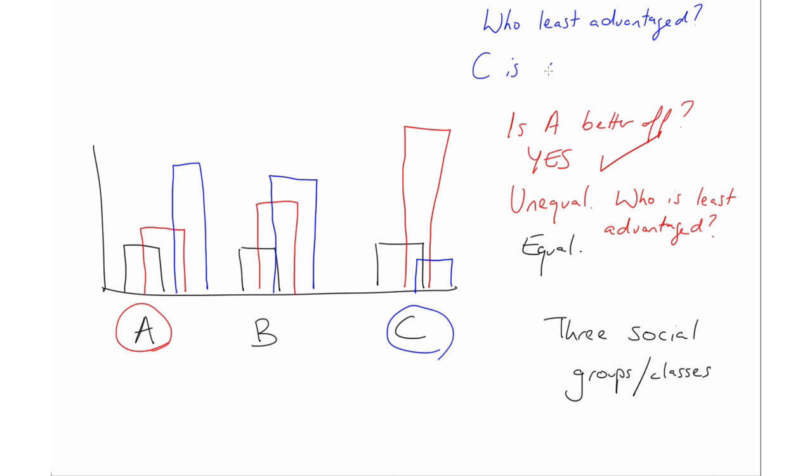Is C worse off than they would be under an equal distribution? Yes. You can see here, there's a gap between what they would have got under the equal distribution and what they get under the blue distribution. So they're worse off. So this distribution is not to the maximum benefit of the least advantaged. And the difference principle would say, it is unjustified.